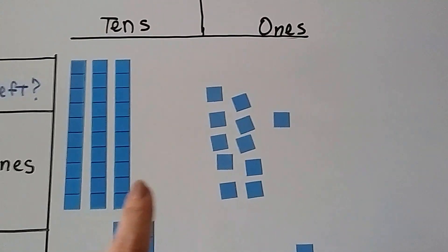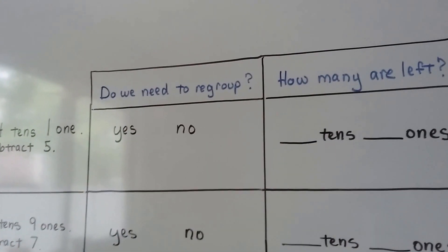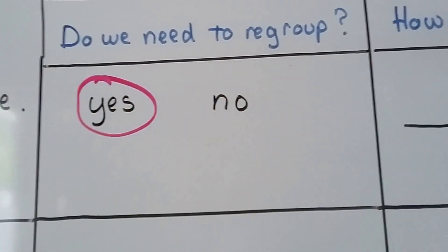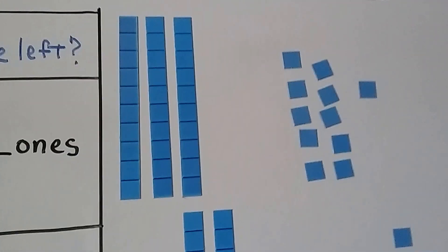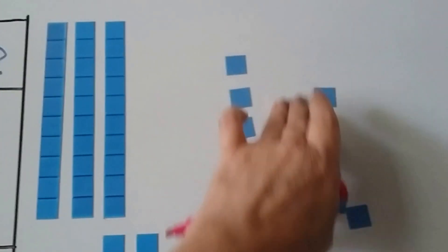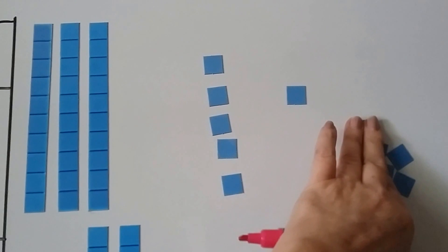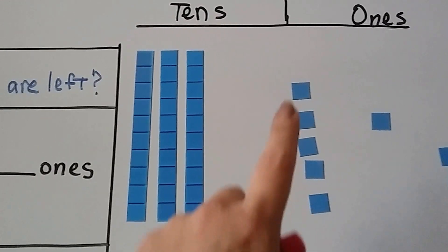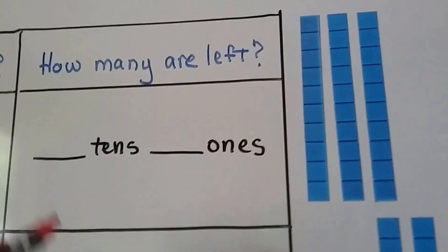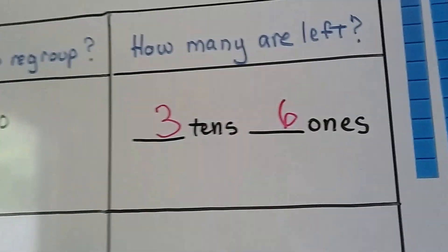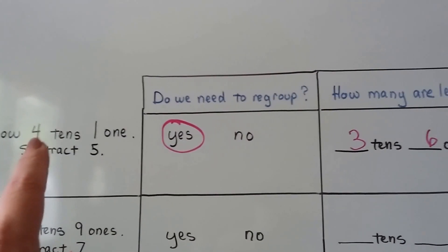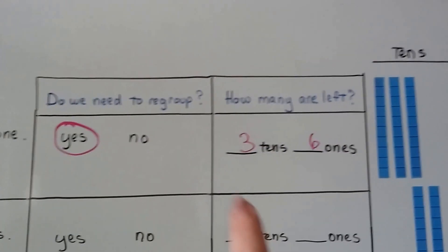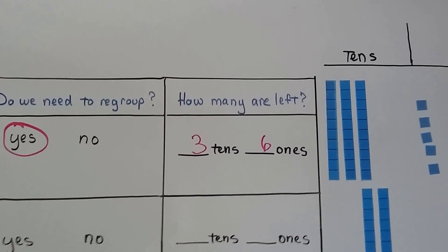Now we've got 3 tens and 11 ones. We need to subtract 5. Did we need to regroup? Yes, we did. So let's take 5 away: 1, 2, 3, 4, 5. We'll take these 5 away. And now, how many are left? 3 tens and 6 ones. We had 4 tens and 1 one. By breaking one of the tens apart and giving it to the ones place, we were able to take the 5 away. And now we have 3 tens and 6 ones.